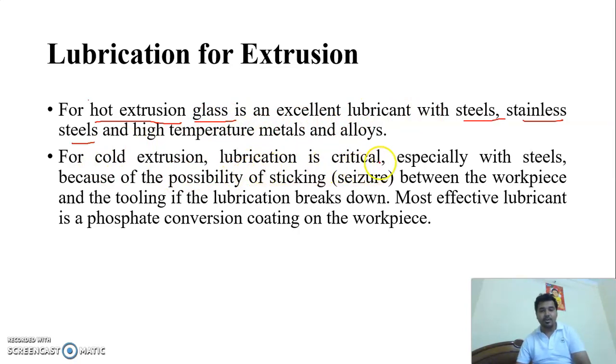And for cold Extrusion, lubrication is critical, especially with steel, because of the possibility of sticking between the workpiece and the tooling. If lubrication breakdown, most effective lubrication is phosphate conversion coating on the workpiece. In cold Extrusion, lubrication is crucial and very critical, because if we use the cold Extrusion process in brittle material, then it is a possibility of cracking. Therefore, the lubrication is critical in cold Extrusion. We use the lubrication as phosphate extrusion.